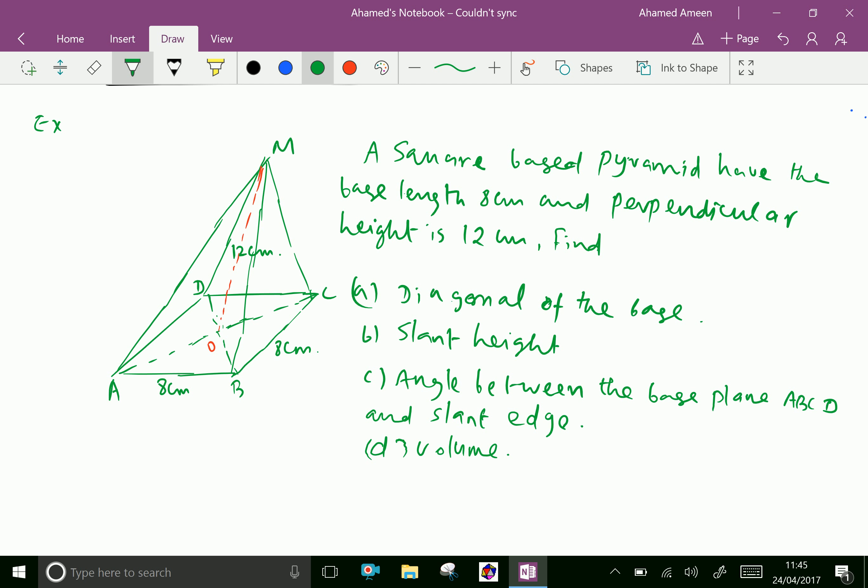Then find: a) diagonal of the base, b) slant height, c) angle between the base plane ABCD and the slant edge, and d) volume.